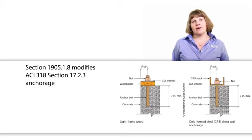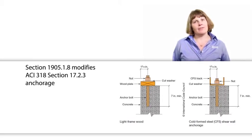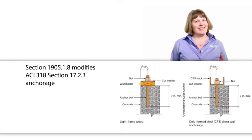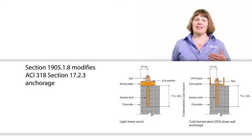Section 1905.1.8 modifies ACI 318 Section 17.2.3. ACI 318 Chapter 17 is on Anchorage.